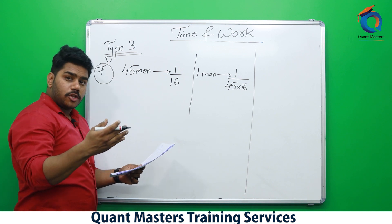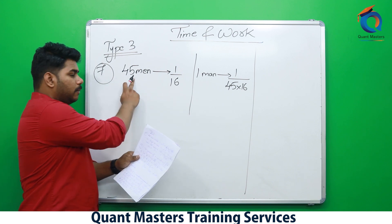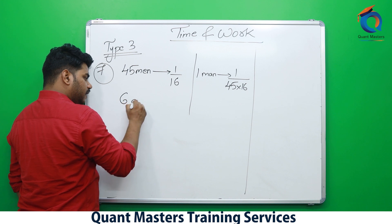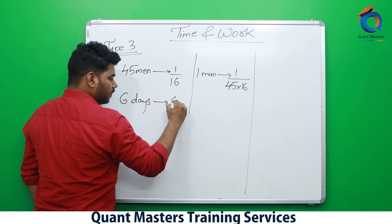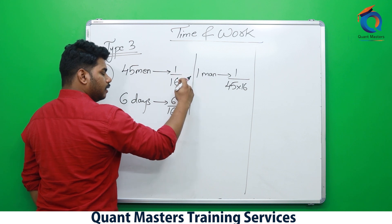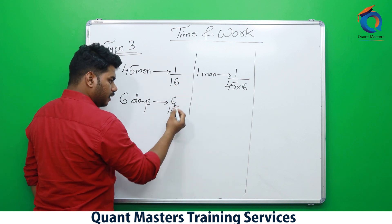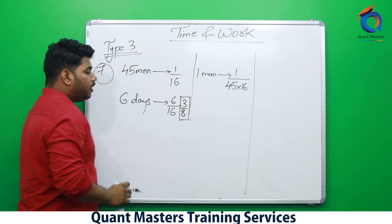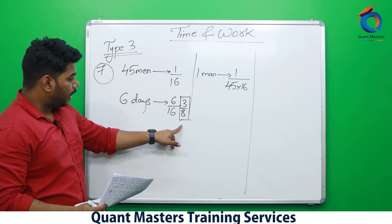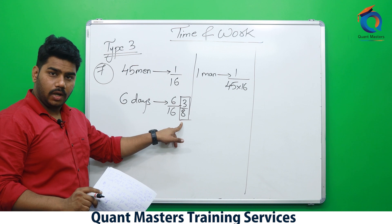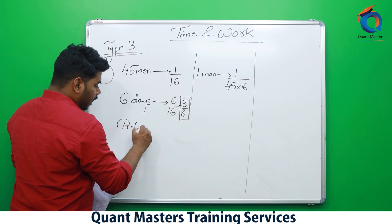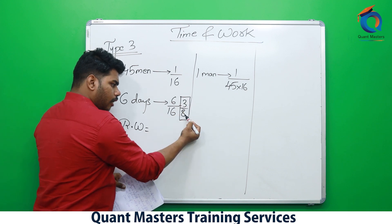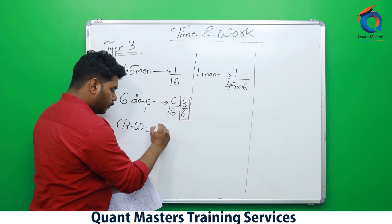After 6 days, 45 men work for 6 days completing 6/16 = 3/8 of the work. Remaining work is 1 minus 3/8 — out of 8 units, 3 are eaten, so 5/8 remains. Now 30 more men joined, making 75 men total. These 75 men must complete 5/8 of the work.